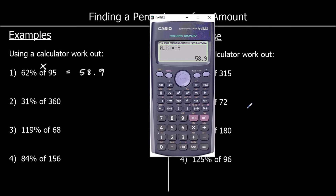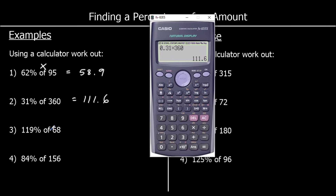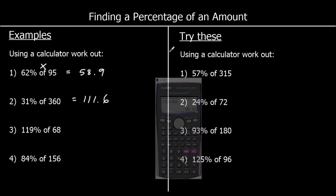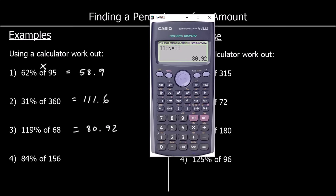Question 2: 31% of 360. Typing 0.31 times 360 gives 111.6. For the next one, typing 119% times 68 gives 80.92. And for the last one, 84 hundredths times 156 gives 131.04.